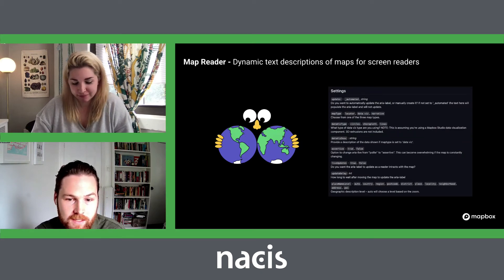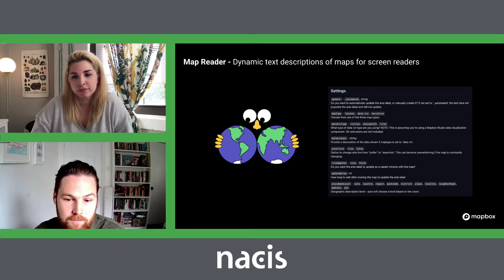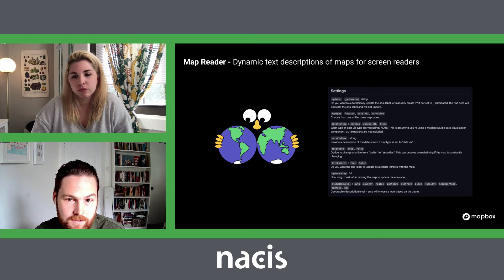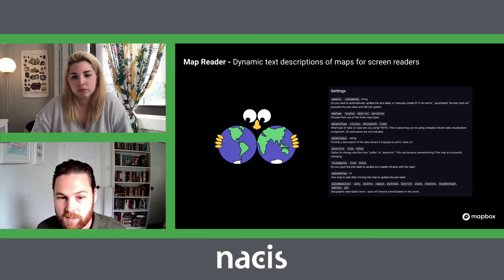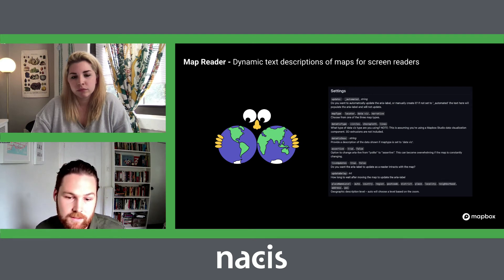For my Hack Week project, I focused on an idea called Map Reader — a dynamic text description of Mapbox maps for screen readers. This idea came to me from my background in journalism, where I had been exposed to how screen readers would fail, especially on interactive charts and graphics. I started thinking abstractly about what an interactive map could be and how it could just be a text description. In the code, I have all these settings applied related to what type of map you would use and some levels of description you can include that would be pretty static.